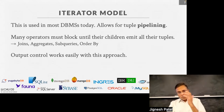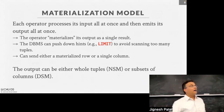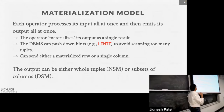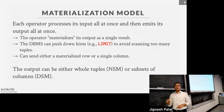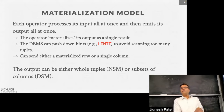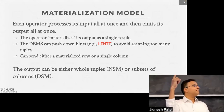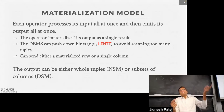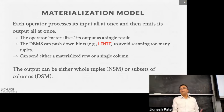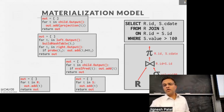All of this made sense in the 1980s, but then memory started to get bigger and other models were developed. This is the second model: the materialization model. When an operator is called, instead of returning one record, it produces its entire output and returns it all back up to the caller. Each operator gets called once, returns its whole output, and is done. Here's what it looks like with the same tree — slightly different code where the scan on R adds to an internal array kept in memory, then returns the whole array — a copy of table R — to the parent.